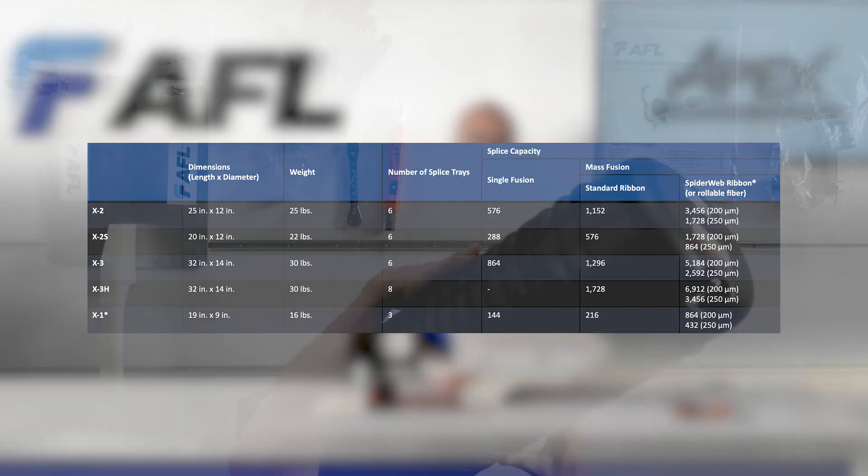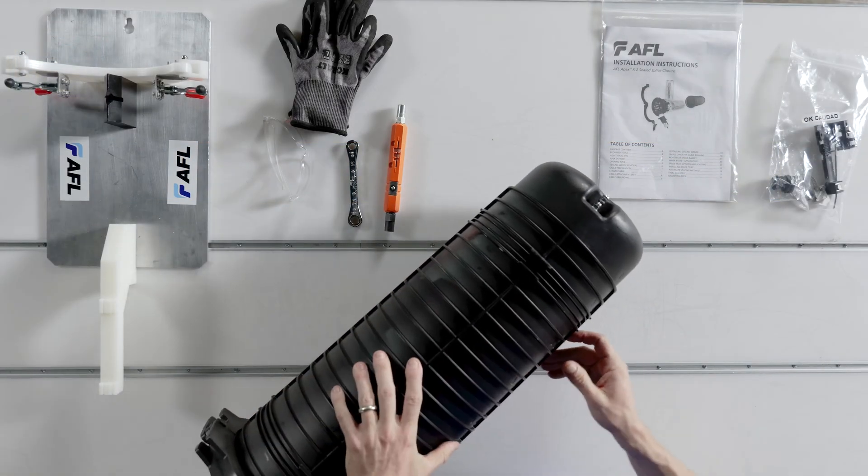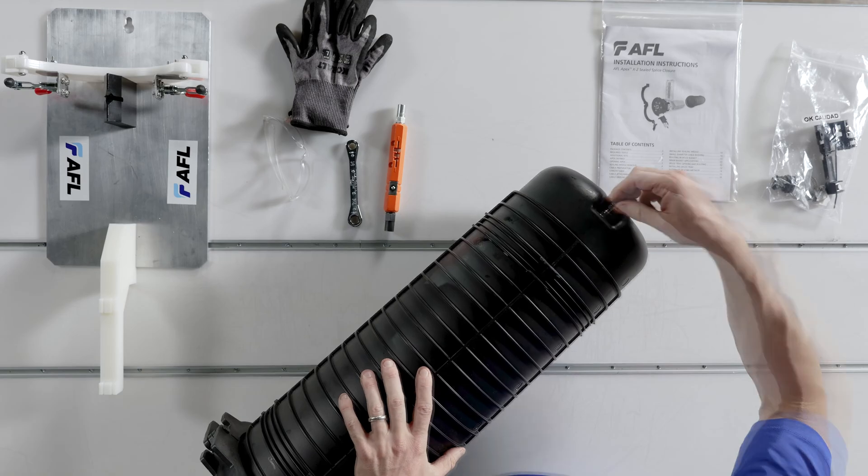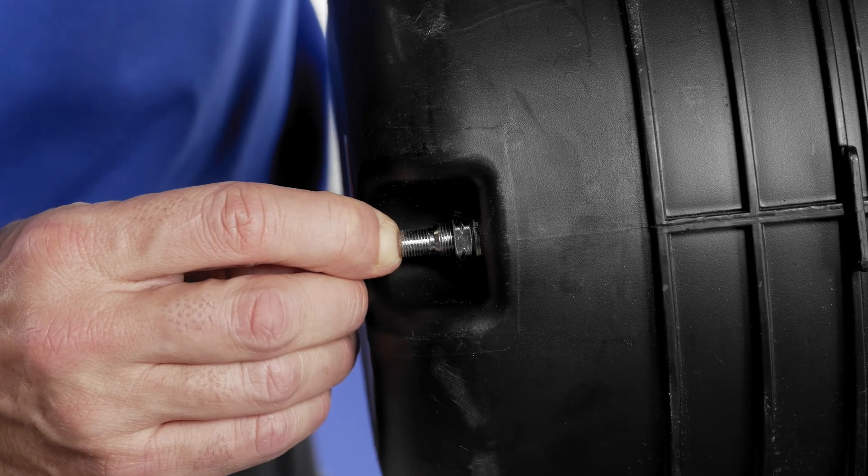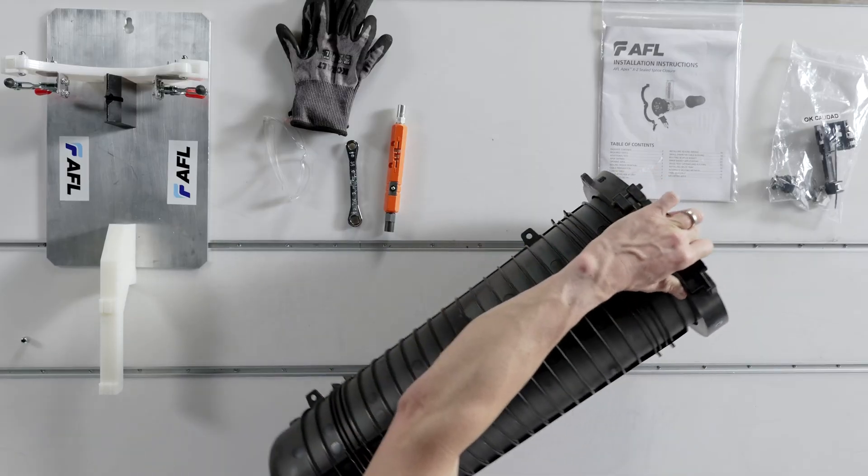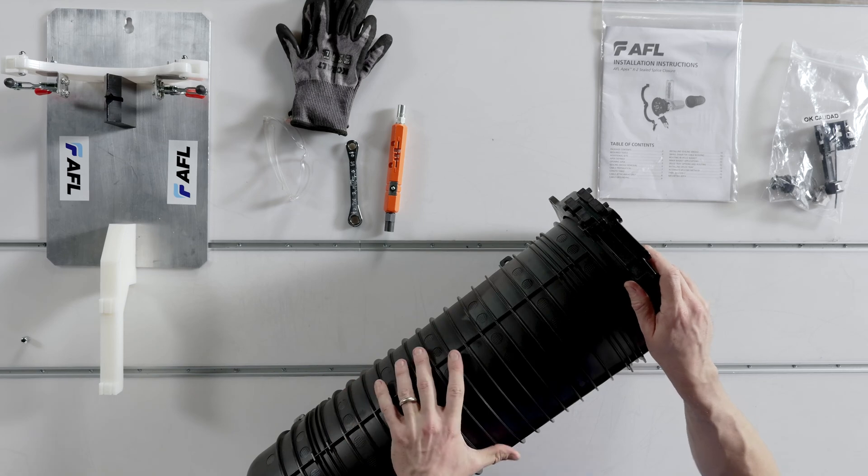Safety is a priority for all sealed closures. Confirm there is no pressure or vacuum in the apex by activating the plunger of the flash test on the dome. Apex has a toolless entry. Open the locking ring by pulling the lock ring latch with the closure secured.